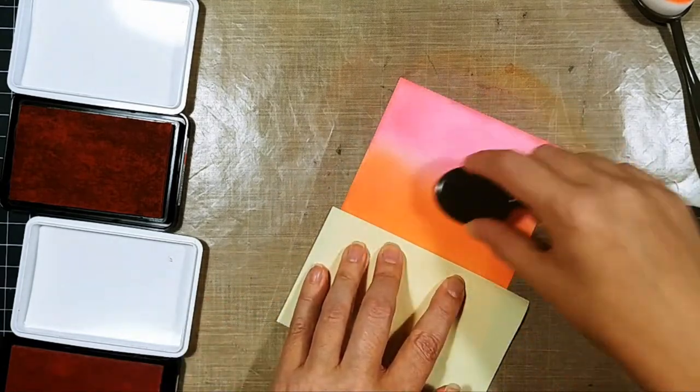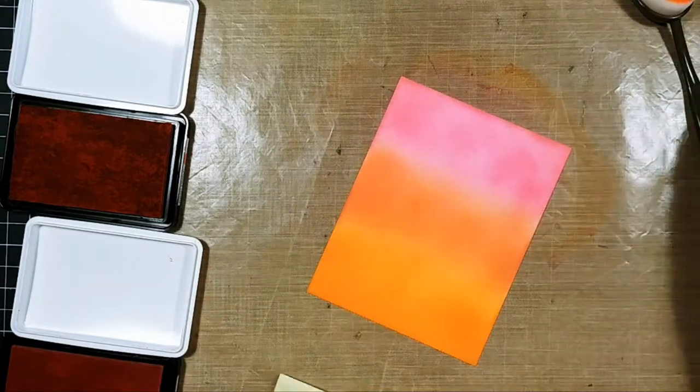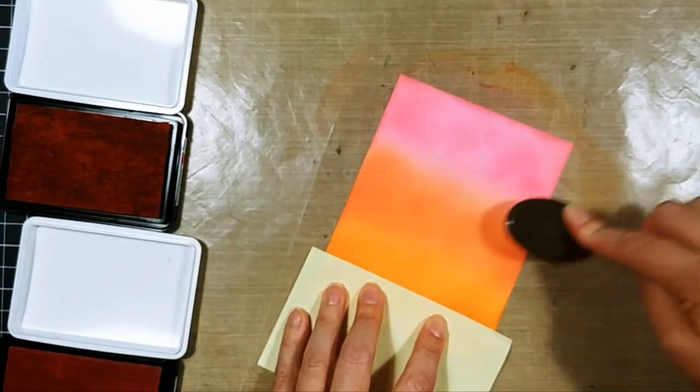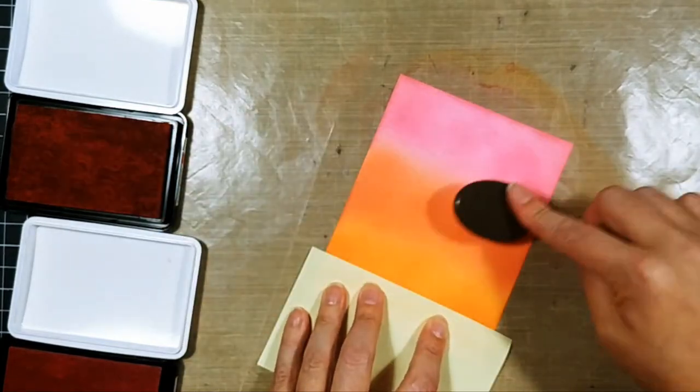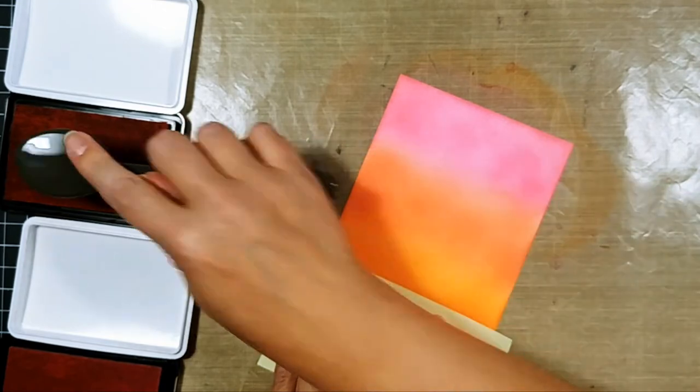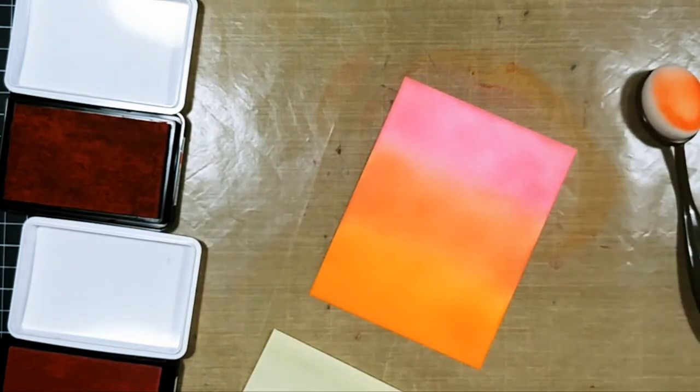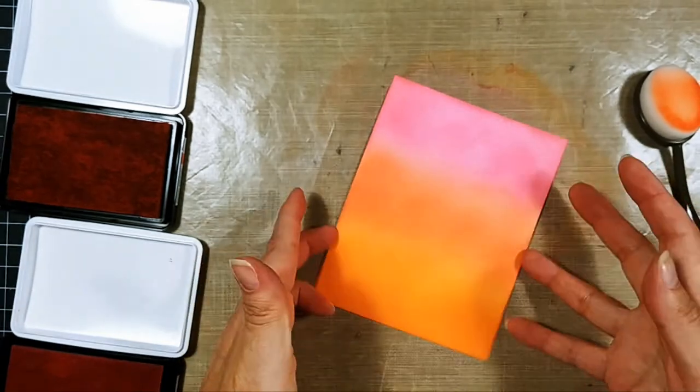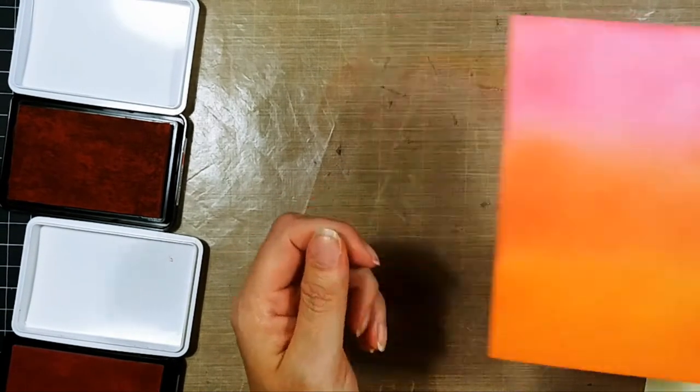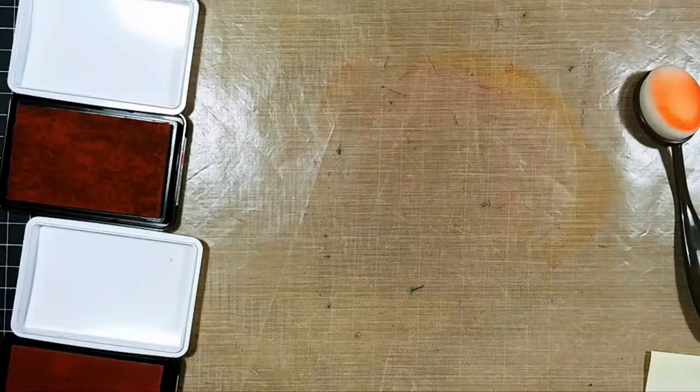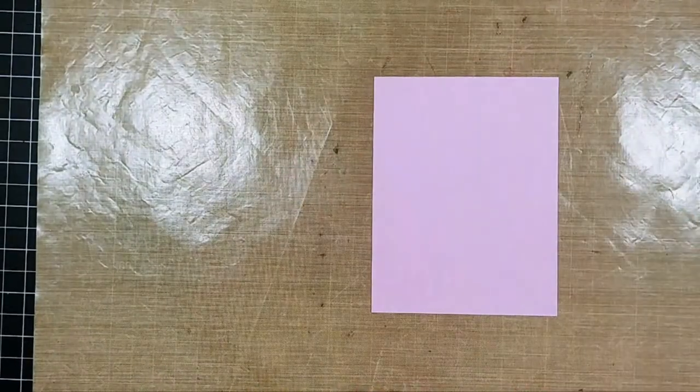This panel took about ten minutes to ink blend total, so not too bad. About double that five minute card mark. So super simple, easy technique. You can pop a really large sentiment over this, trim this down to give it a really nice white border over it, and that's it. Absolutely gorgeous. Or you can stamp and do white heat embossing over top of it or even black heat embossing over top of it. Be absolutely fantastic. Beautiful ink blending there.